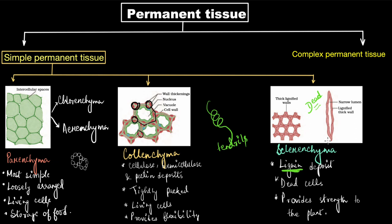Often the cell walls are so thick that there is no internal space inside — the lignin deposition is so much that it fills up the entire cell, making it a super hard tissue. This tissue is present in the stems around the vascular bundle, in the veins of leaves, and in the hard covering of seeds and nuts.